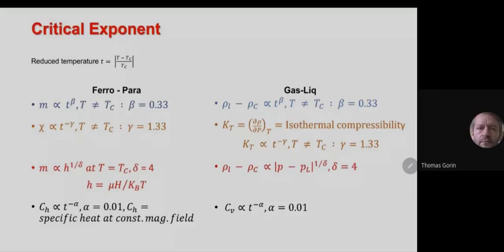It is so universal that even changing the order of the transition does not change these values. For the gas-to-liquid case, rho_L minus rho_C also goes as t to the power beta, and experimentally beta is 0.33 for most gas-to-liquid phase transitions. Similarly, the susceptibility chi goes as t to the power minus gamma, where gamma is 1.33.